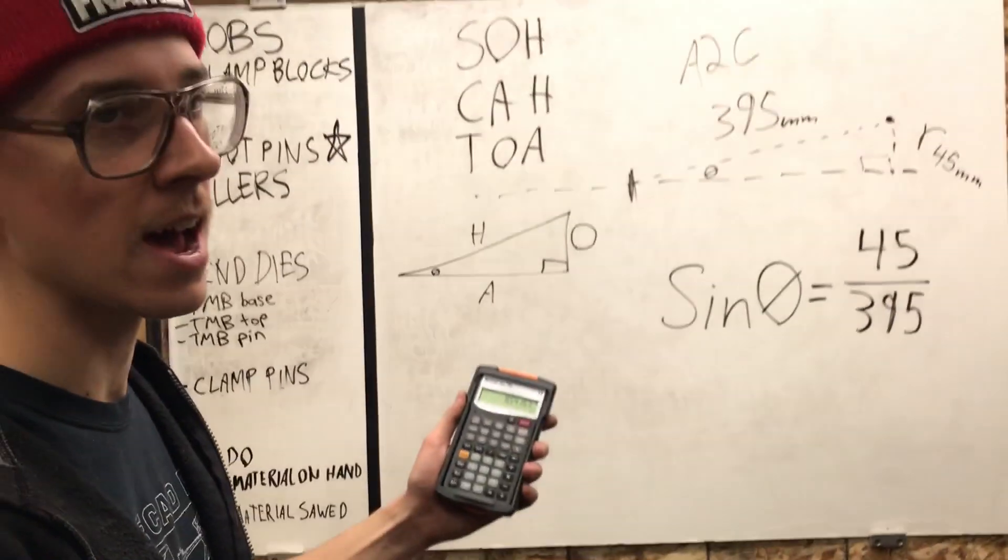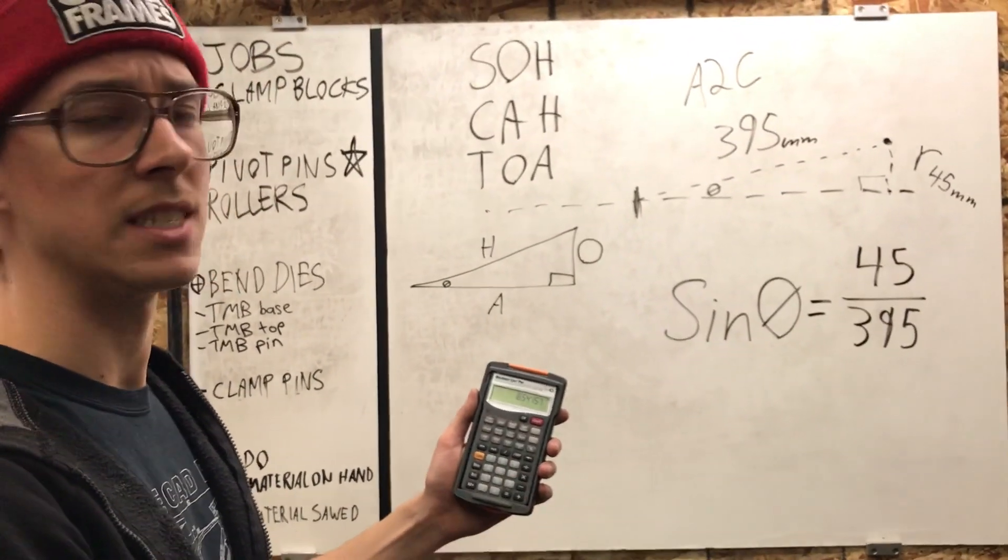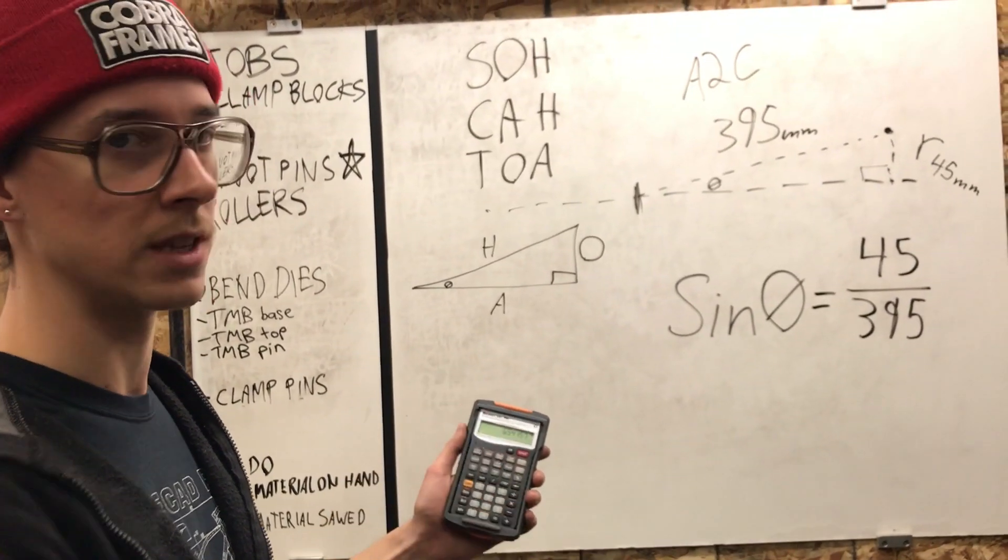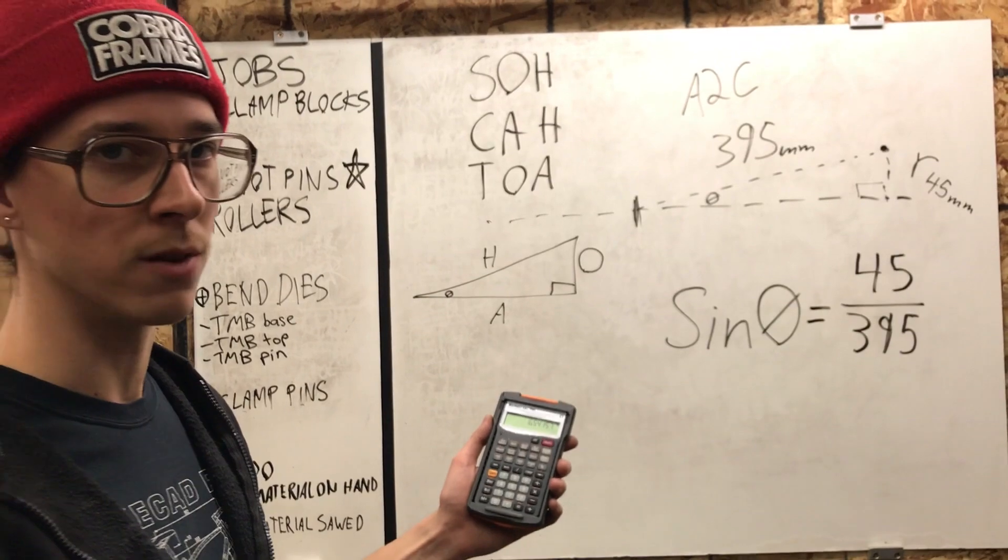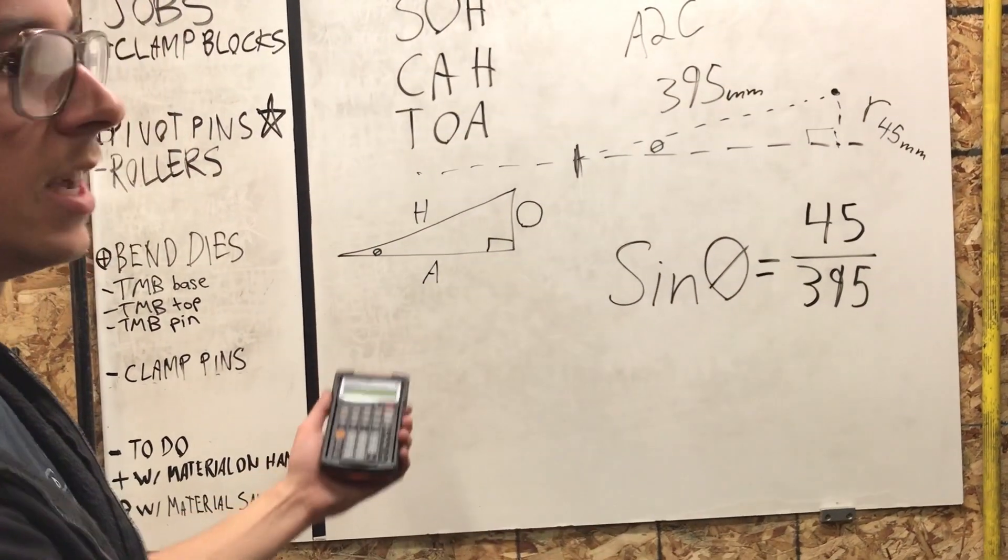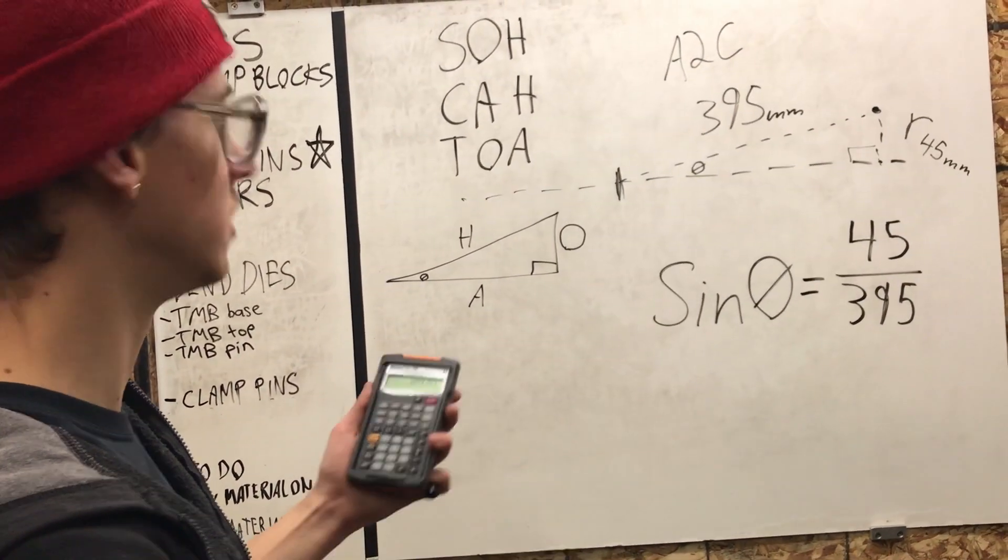So this is a fancy machinist calculator that I have because it does all this cool stuff that's useful to machining. But if you have any scientific or graphing calculator, or even the scientific version of the calculator that comes on an iPhone or a smartphone, it'll do this the same. There's nothing fancy going on here with this particular calculator in this application. And so now, 6.54 degrees.